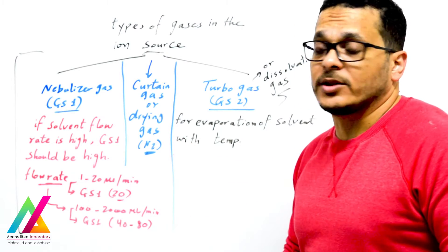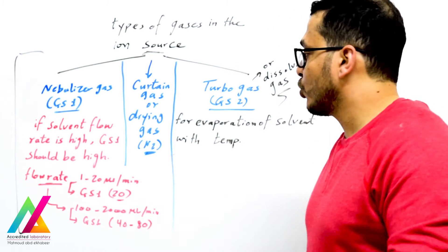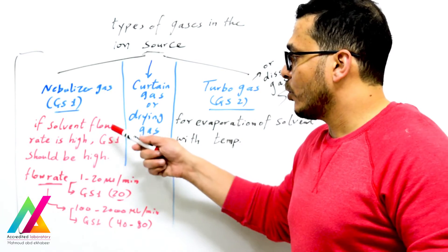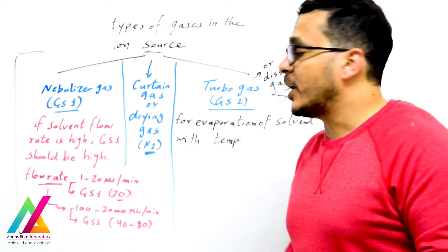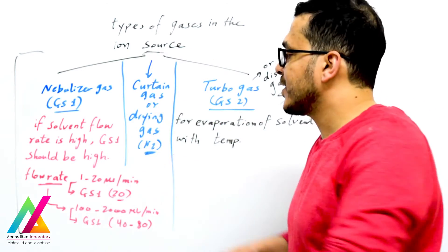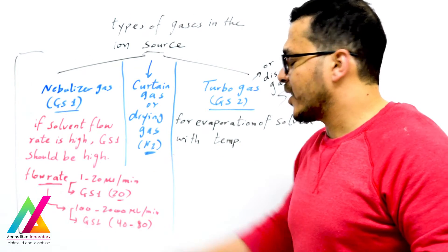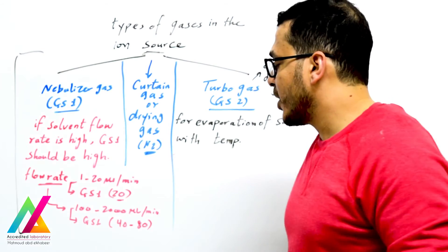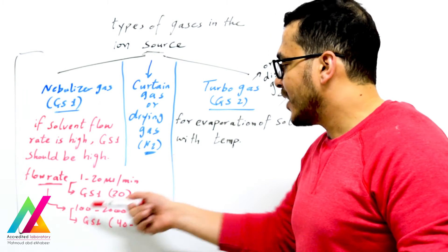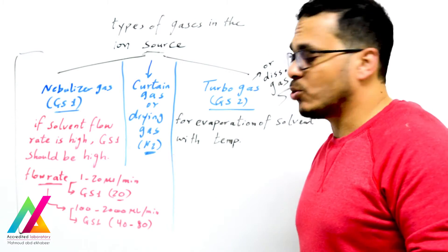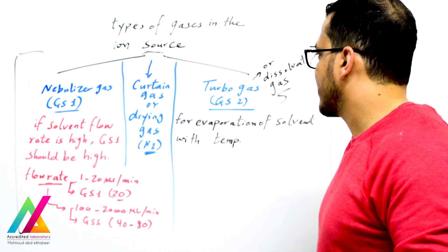Nebulizer gas (Gas 1) is used for nebulization of the eluent carrying sample molecules to form spray droplets. If solvent flow rate is high, Gas 1 should also be high. For a flow rate of 1 to 20 microliters per minute, Gas 1 should be set to 20; from 100 to 2000 microliters per minute, Gas 1 should be set from 40 up to 80, and you will optimize this accordingly.